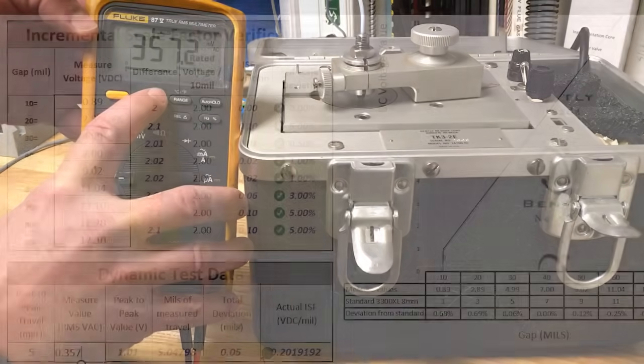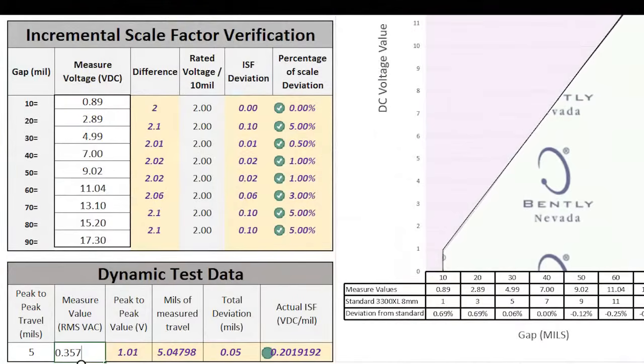Record the average value. If you are using my spreadsheet, simply plug the numbers into the dynamic test table. The spreadsheet will automatically calculate the voltage measurement and provide you with the actual measured travel, as well as the deviation from the standard. A pass or fail condition will be flagged using a green light or a red light.